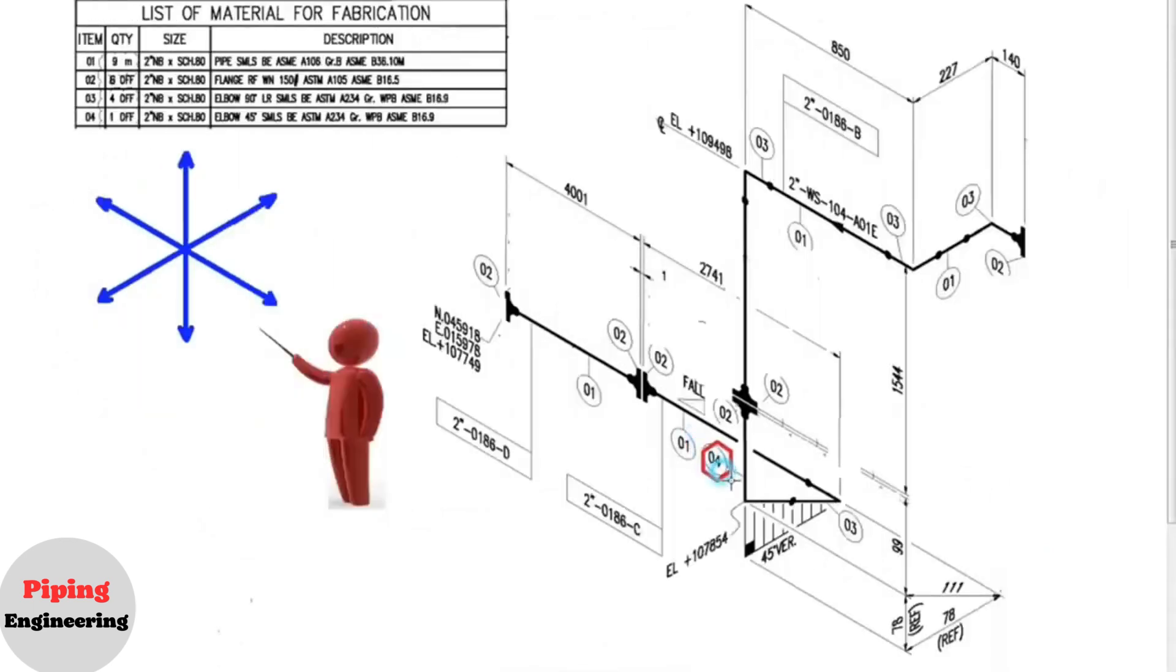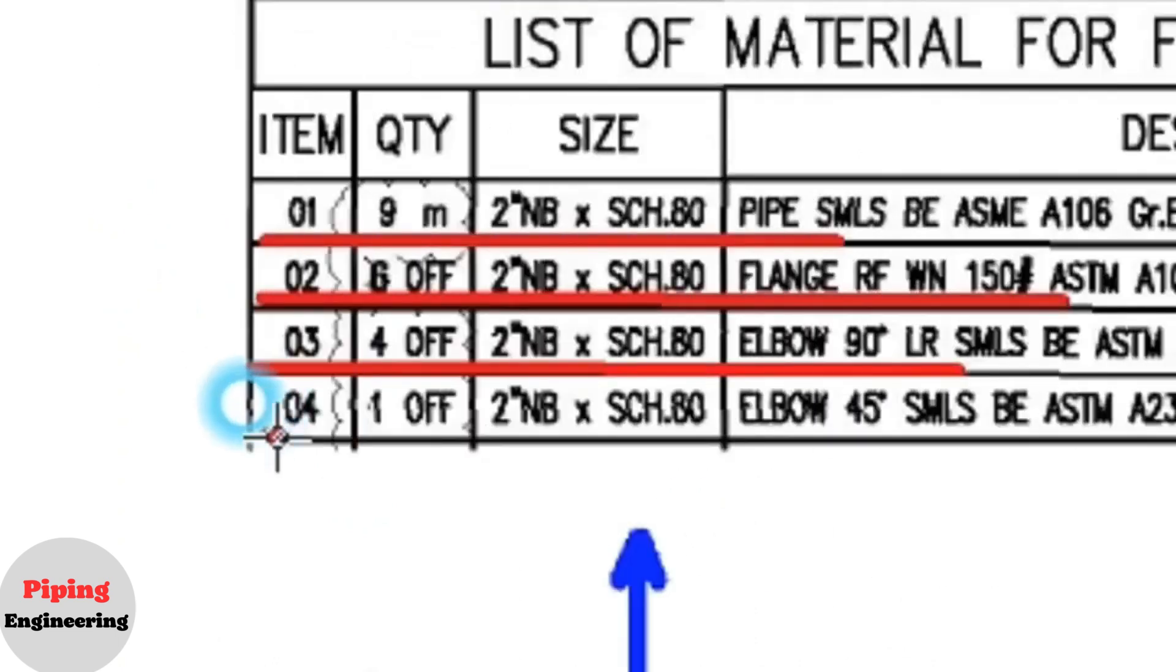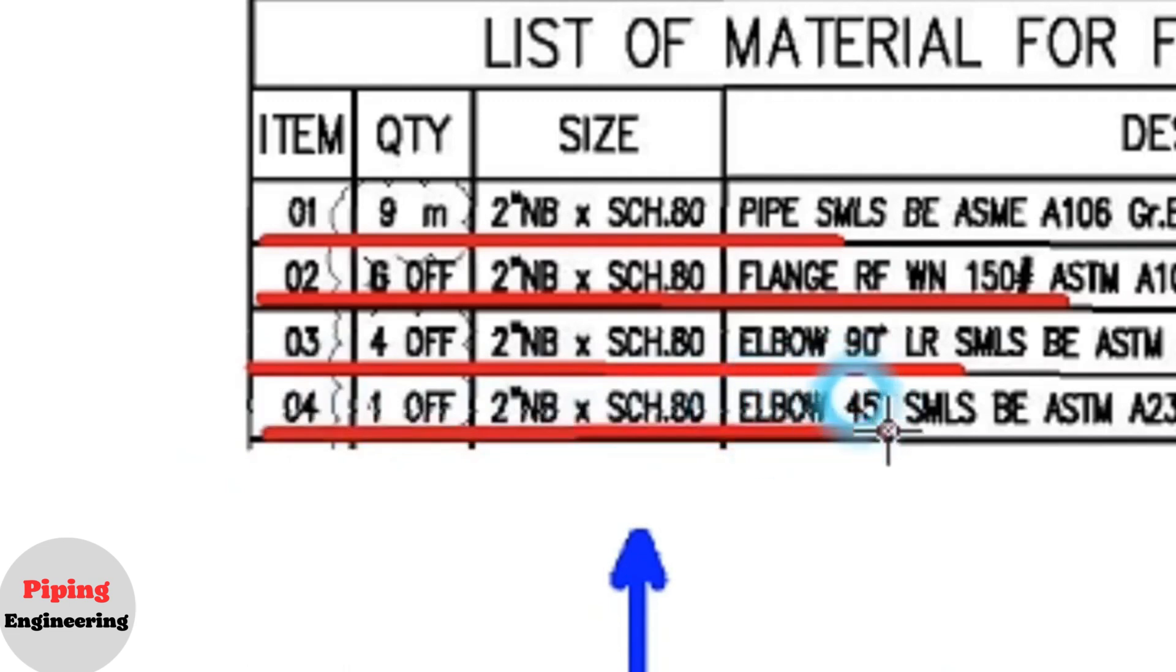This is number 4, the last detail. We look at the material list. Detail number 4: 1 piece, 2 inches, schedule 80, 45 degree elbow.